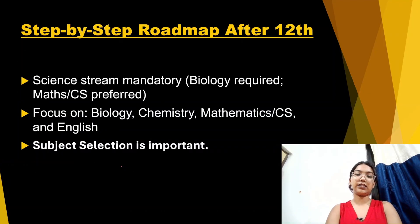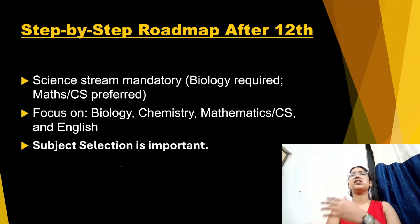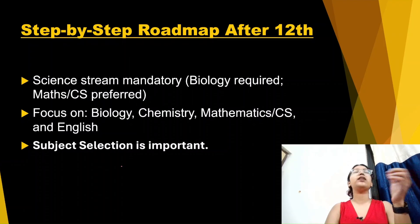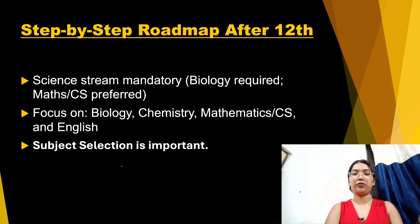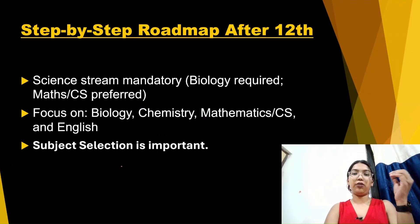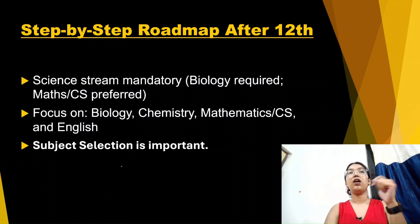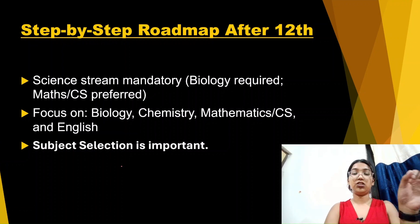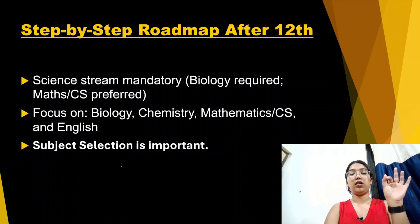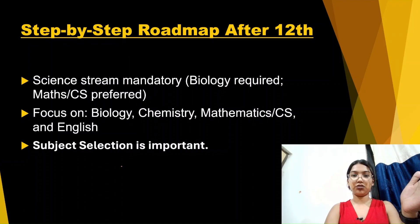Looking at the step-by-step roadmap after 12th, the basic subjects you should have — if you've decided you want to do bioinformatics and develop a good career in it — you should have key knowledge in biology, maths, and computer science. These are the core subject selections.